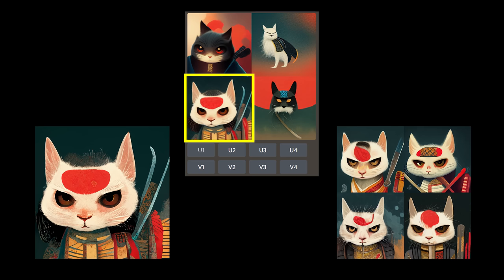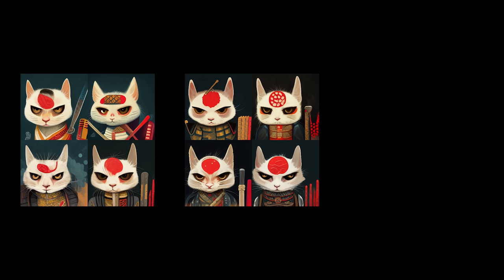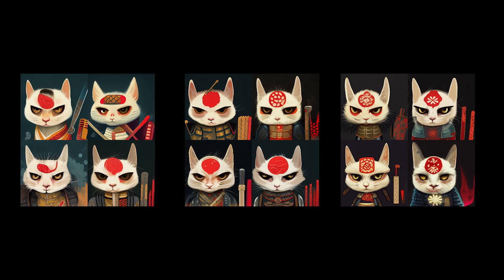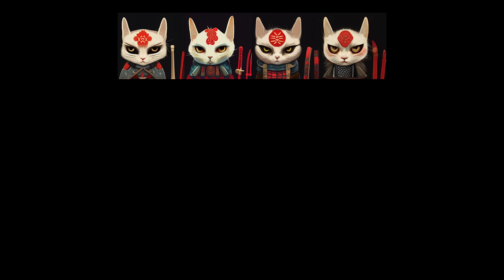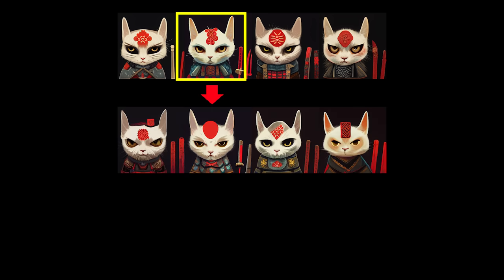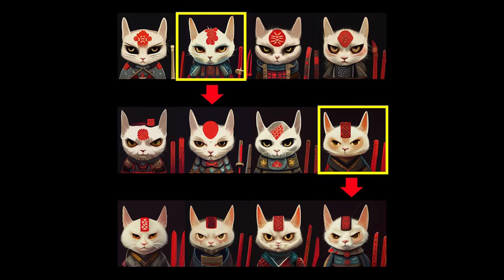There is something very interesting about generating variations, which is that you can generate variations of variations of variations. There is no limit. To rephrase it, you are selecting and then mutating, and then selecting and mutating again, and evolving the images you like the most. You are breeding pictures.